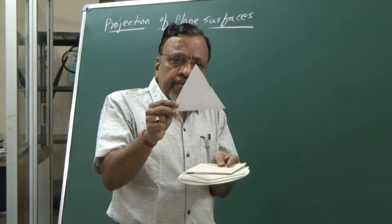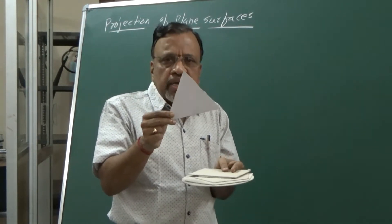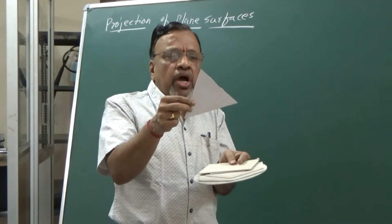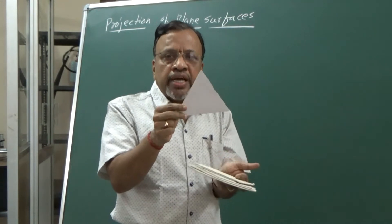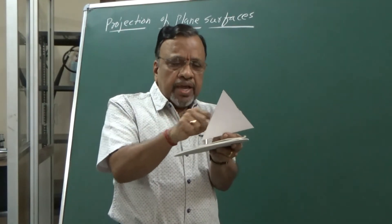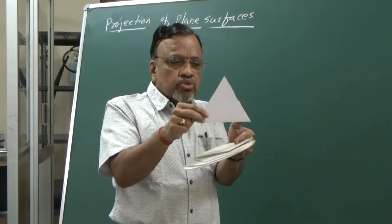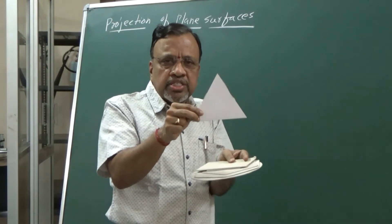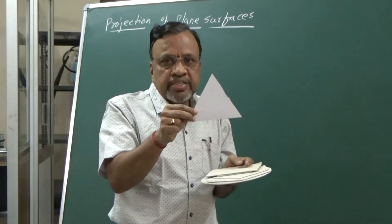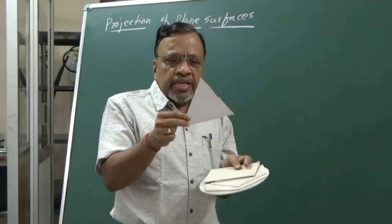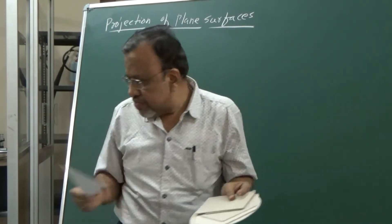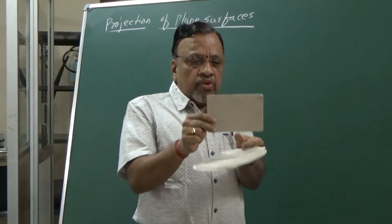Even in the case of a triangular lamina we can have two types. One is an isosceles triangle and another is a right angle triangle. But generally we consider a polygon such that all sides make equal inclinations — that is, all included angles are 60 degrees. So unless otherwise specified, we consider a triangular lamina with included angles of 60 degrees, which is an equilateral triangle.